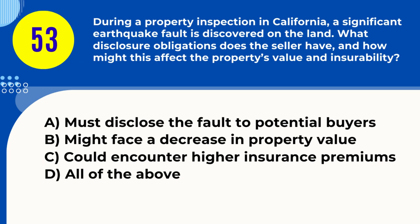Question 53. During a property inspection in California, a significant earthquake fault is discovered on the land. What disclosure obligations does the seller have, and how might this affect the property's value and insurability? A. Must disclose the fault to potential buyers B. Might face a decrease in property value C. Could encounter higher insurance premiums D. All of the above. Answer: D. All of the above. Explanation: Discovering an earthquake fault requires disclosure, may decrease value, and could lead to higher insurance costs.